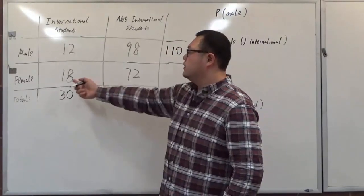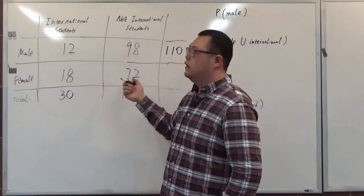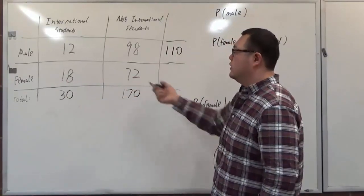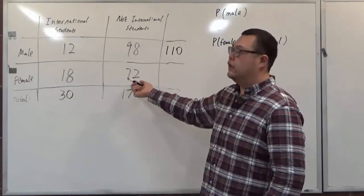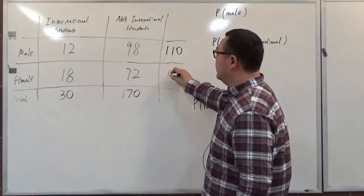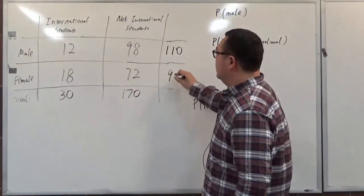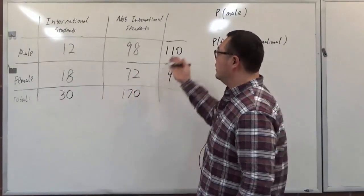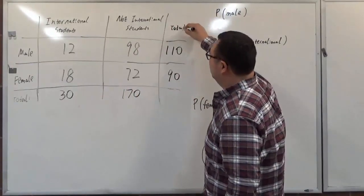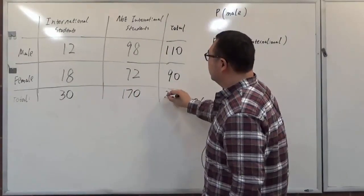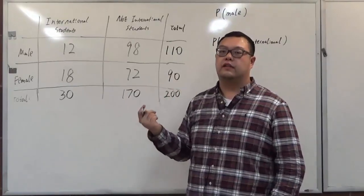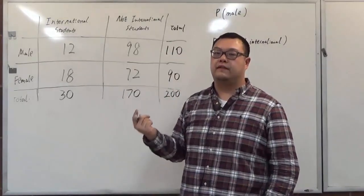For the female row, we have 18 international and 72 non-international together, giving us 90. So no matter what, the row totals and column totals together give us the overall total of 200 students being surveyed.